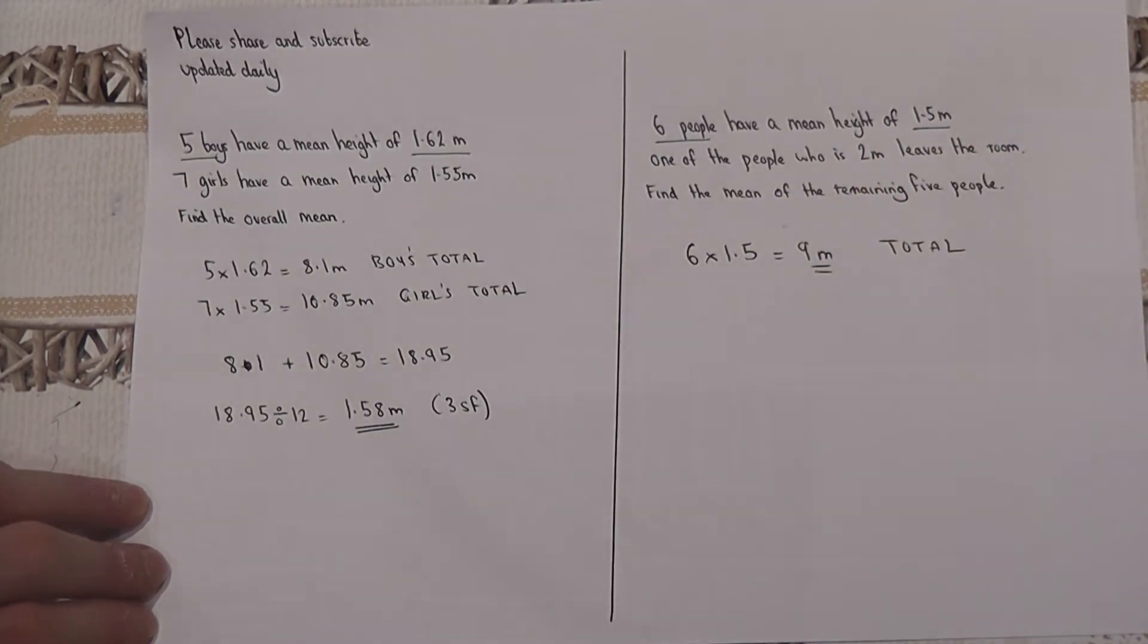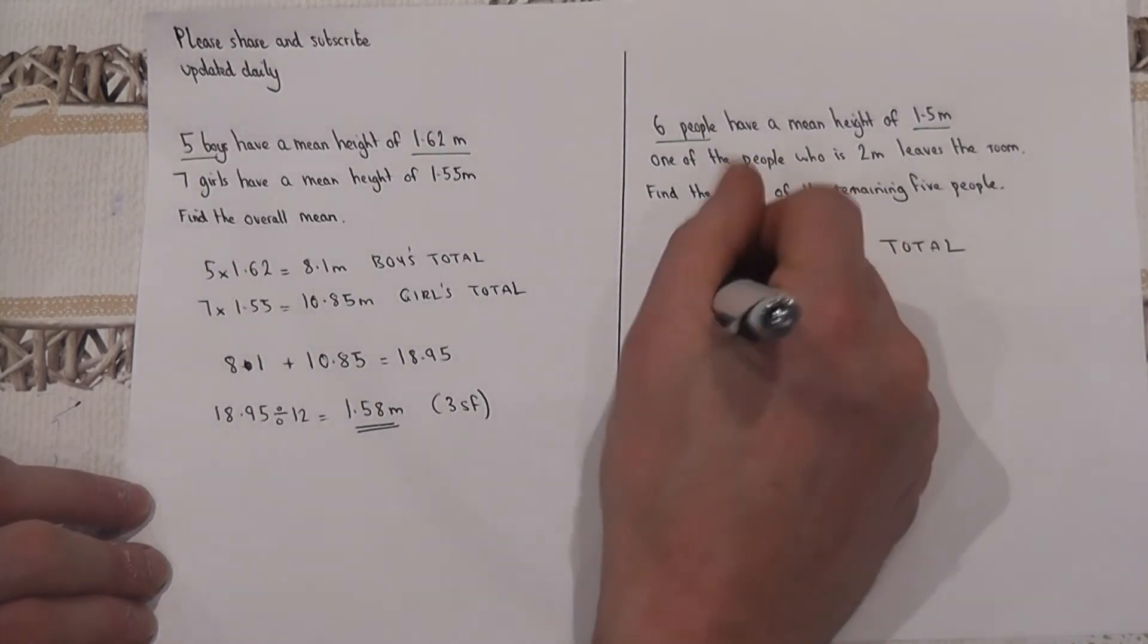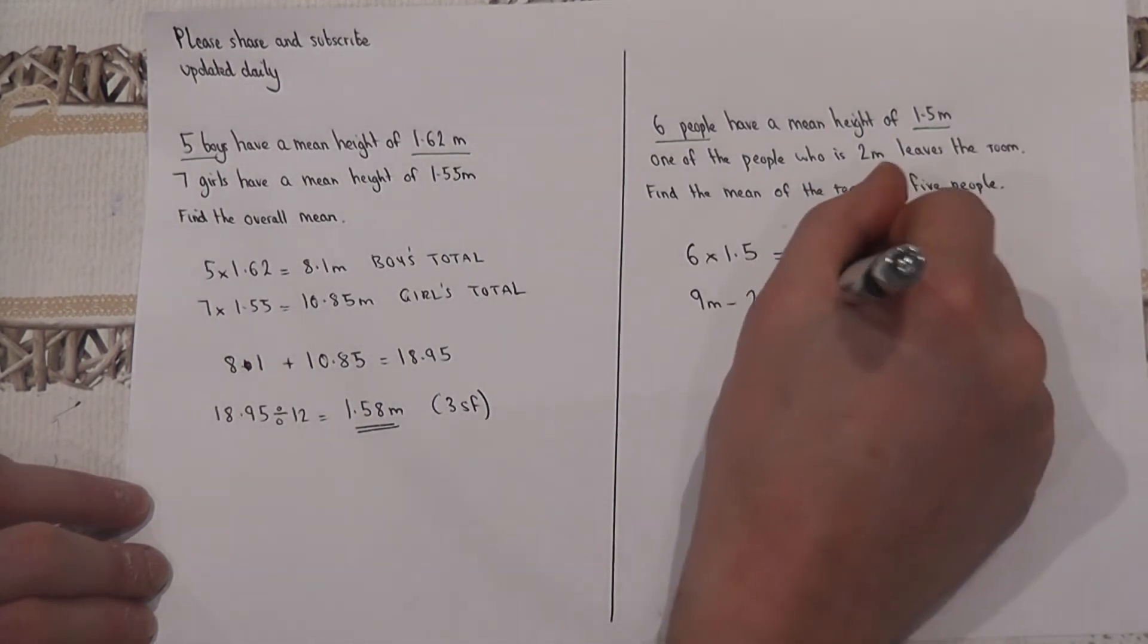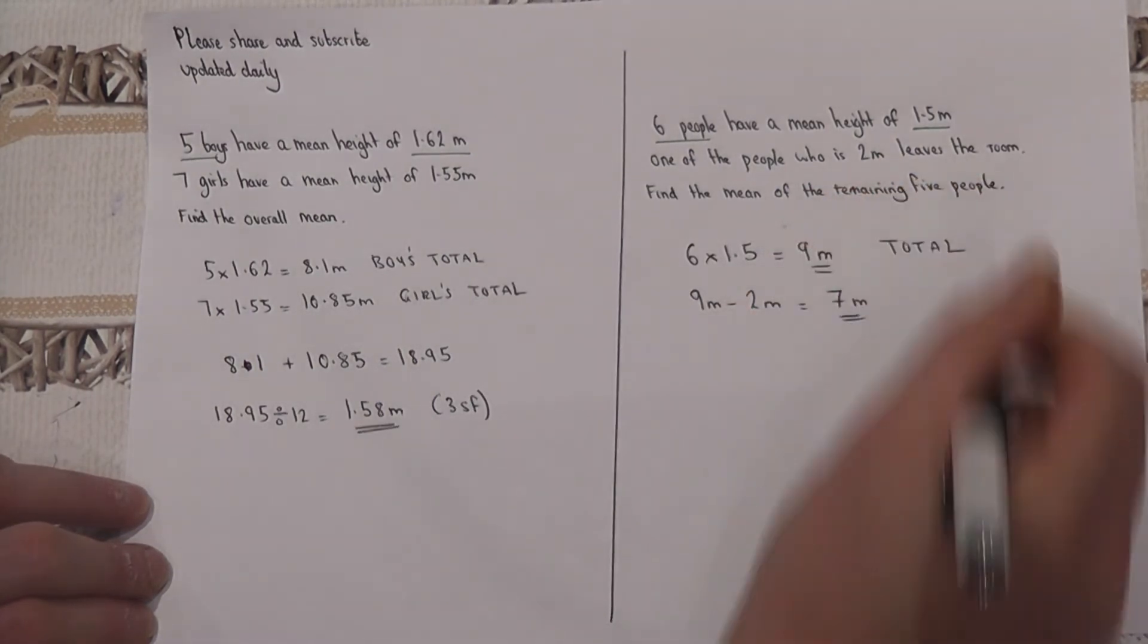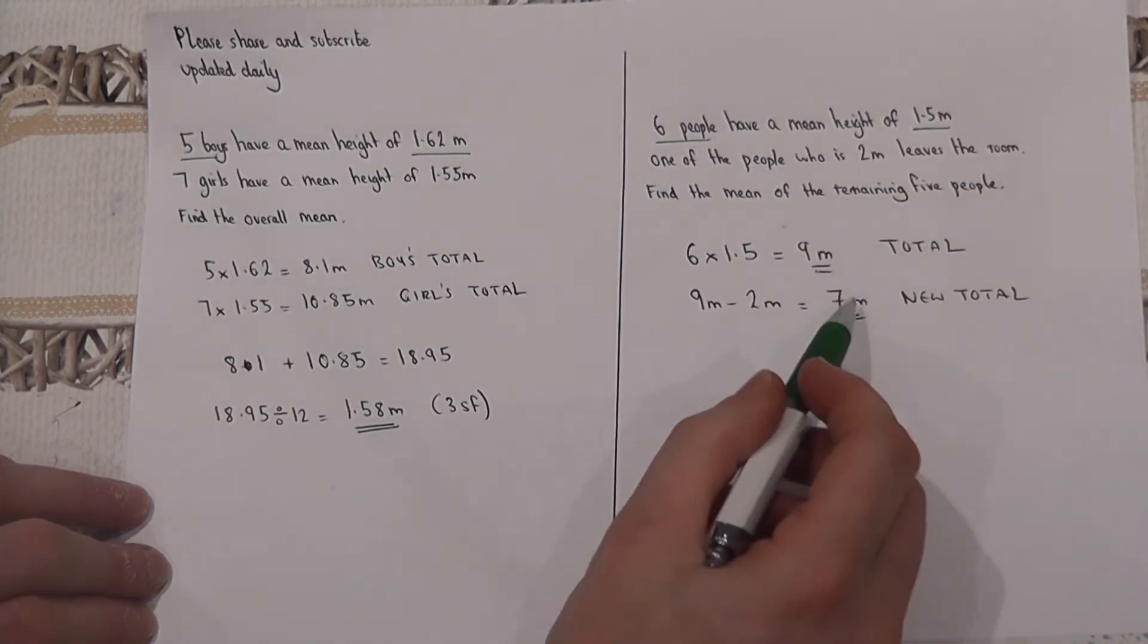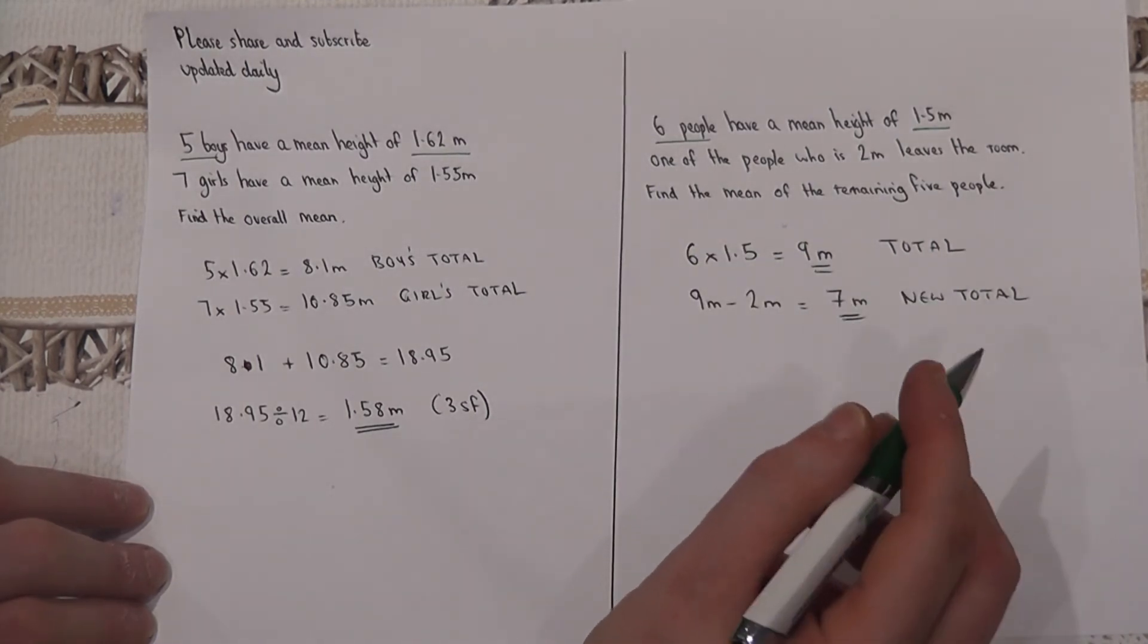However, what then happens is someone leaves the room and they're two meters tall. So the total height in the room decreases by two meters. Therefore the total height now is only seven meters, and that is the total height of the five remaining people.